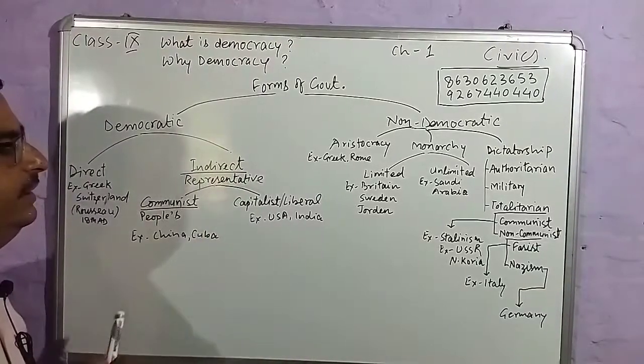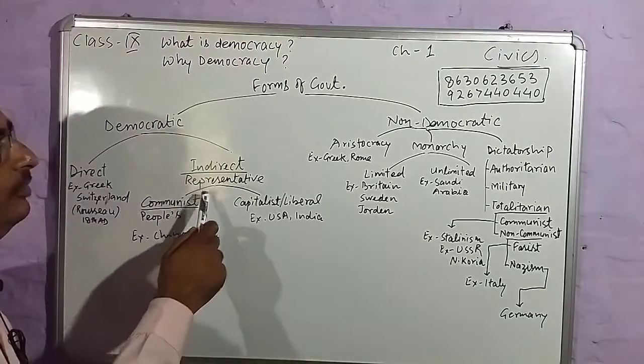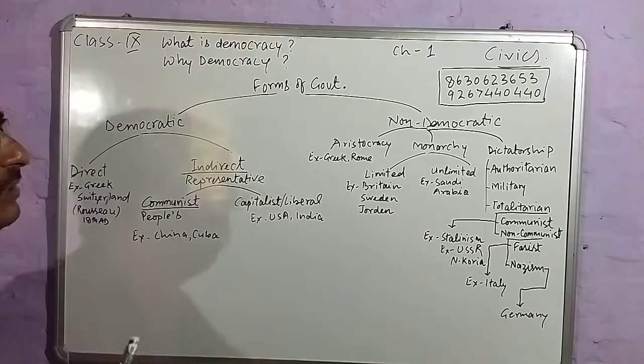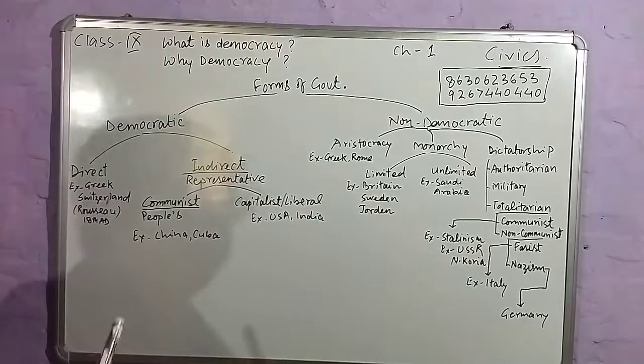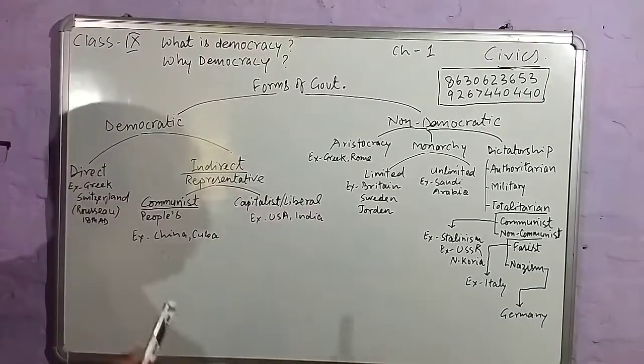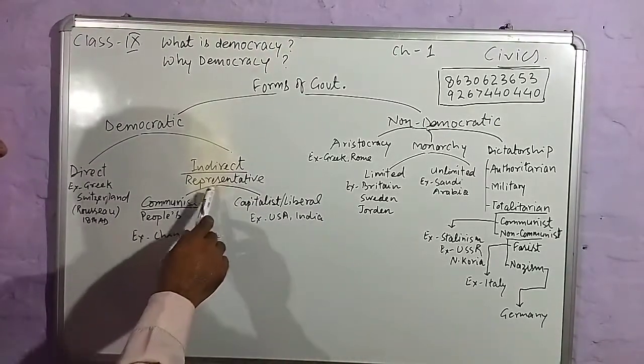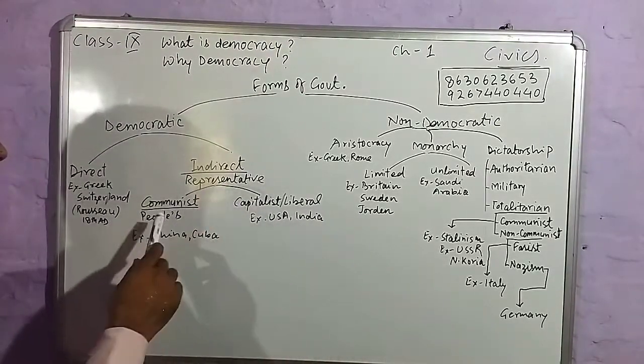Indirect democracy is also called representative democracy. In indirect democracy, the people elect representatives who govern on their behalf.